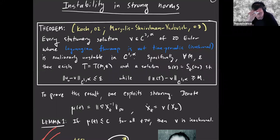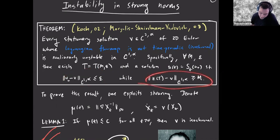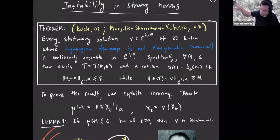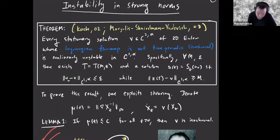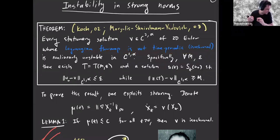These results basically show that in strong norms, stationary states are extremely unstable, even the Arnold stable ones. Specifically: if you take any sufficiently smooth 2D Euler steady state with the property that the Lagrangian flow map is not time-periodic — Yudovich calls this condition non-isochronal — then it's nonlinearly unstable in C^{1,α}. For any M large and ε small, there's some time for which the solution which started within ε in C^{1,α} leaves a ball of radius M in C^{1,α}. You really develop small scales in a quantitative way.